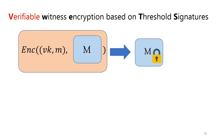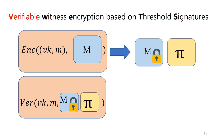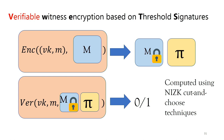One last thing we need is verifiability: Messi should be able to confirm, given just a ciphertext, that it is a valid ciphertext. For this, the encryption scheme also outputs a proof that can be verified by the receiver. To achieve this we use cut-and-choose techniques, which I won't go into in this talk.